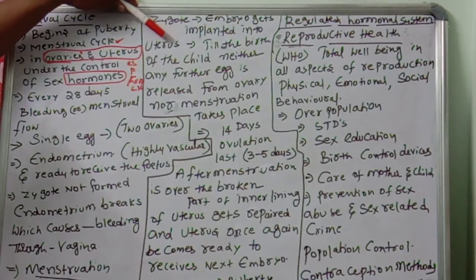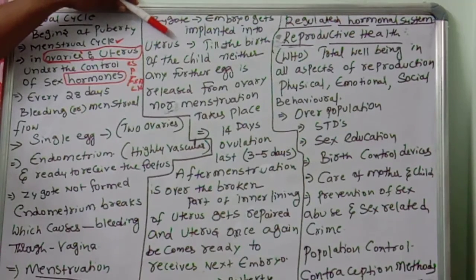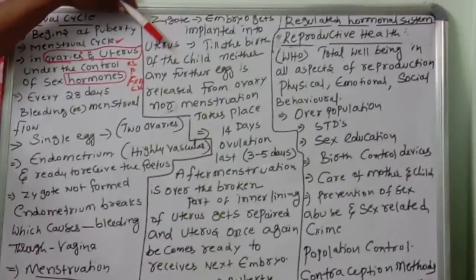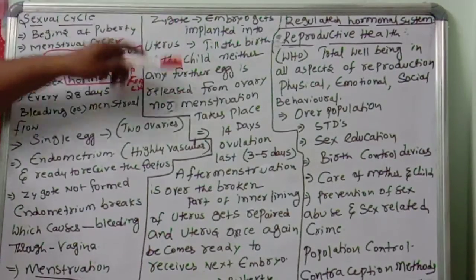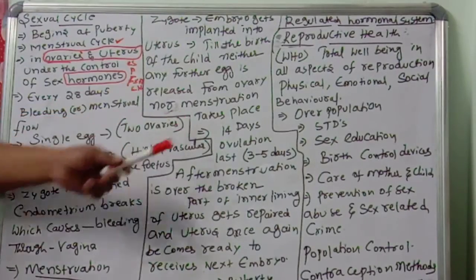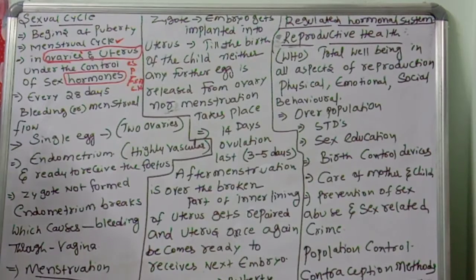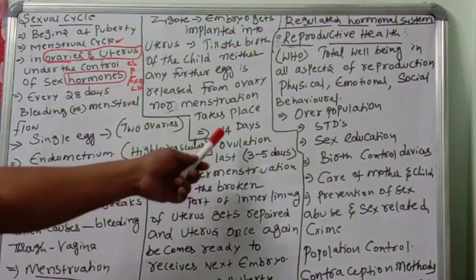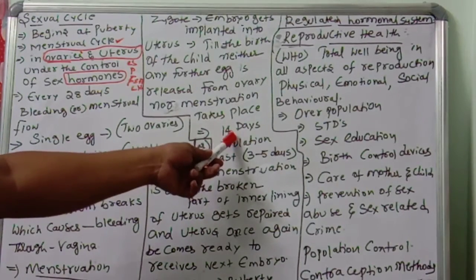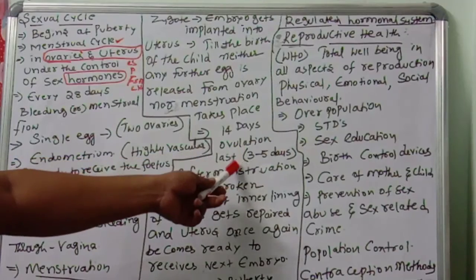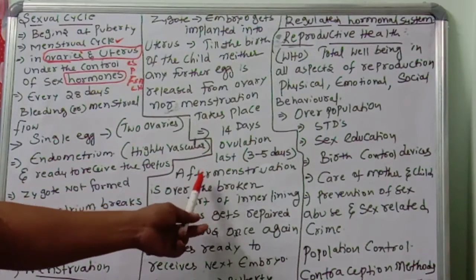If fertilization occurs and a zygote is formed, the embryo gets implanted in the uterus. Until the birth of the child, there is no menstruation and no egg is released. After birth, menstruation resumes. Menstruation usually occurs 14 days after ovulation in the menstrual cycle and lasts three to five days.